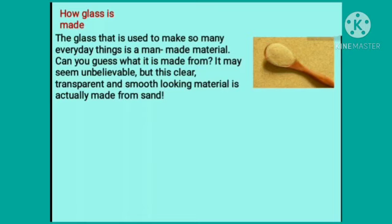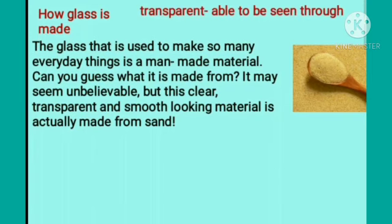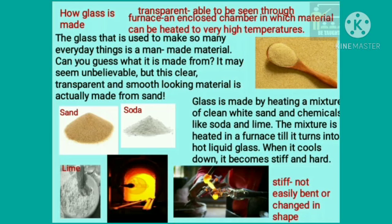Where does this glass come from? How is glass made? The glass used to make so many everyday things is a man-made material. Can you guess what it is made from? It may seem unbelievable, but this clear, transparent and smooth-looking material is actually made from sand. Glass is made by heating a mixture of clean white sand and chemicals like soda and lime. The mixture is heated in a furnace until it turns into hot liquid glass. When it cools down, it becomes stiff and hard.